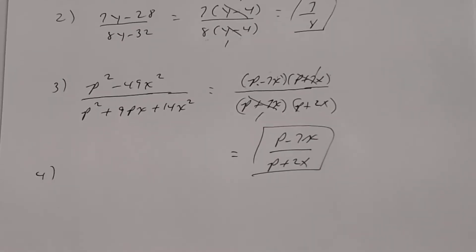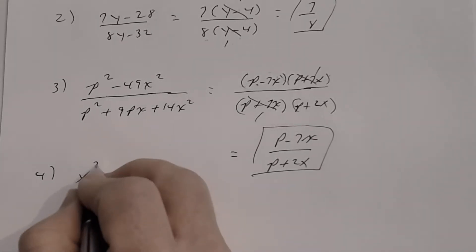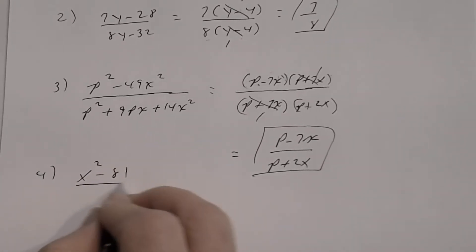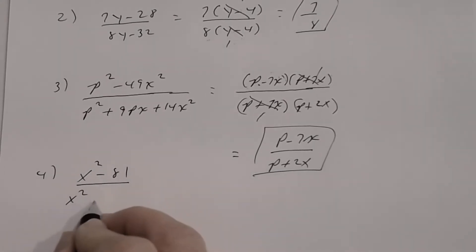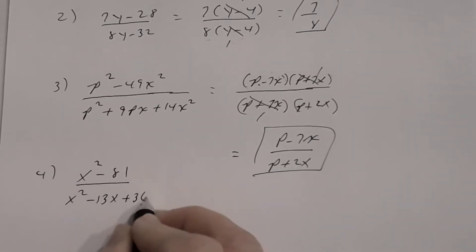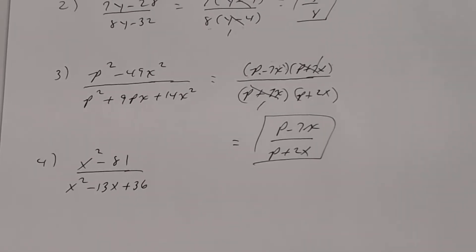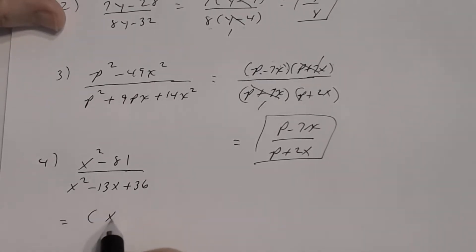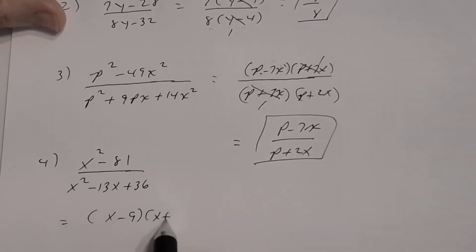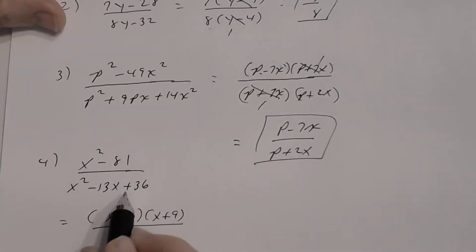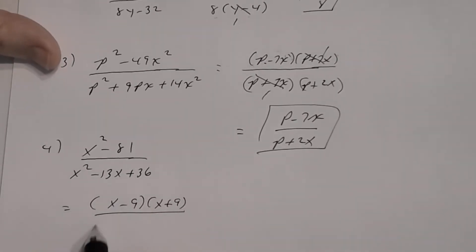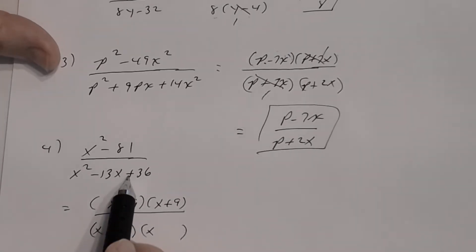Number four: (x² − 81) divided by (x² − 13x + 36). The numerator is a difference of two squares, factoring as (x − 9)(x + 9). The denominator has GCF of 1, trinomial with x·x, last sign is positive so signs are the same and both negative.